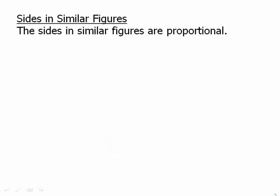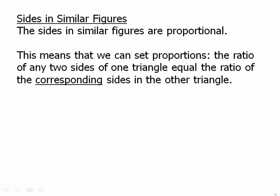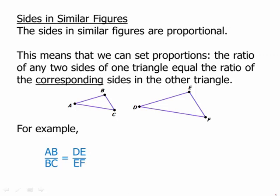Now we can talk about sides in similar figures. The sides in similar figures are proportional. This means that we can set up proportions. The ratio of any two sides of one triangle has to be equal to the ratio of the corresponding sides in the other triangle. For example, if these are similar triangles, the ratio of AB over BC has to equal the ratio of DE over EF. Setting those two ratios equal gives us the proportion we can set up.